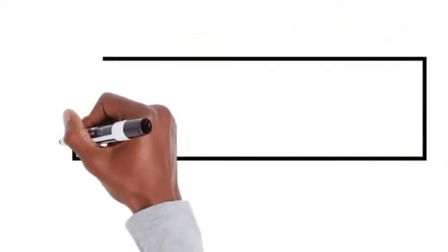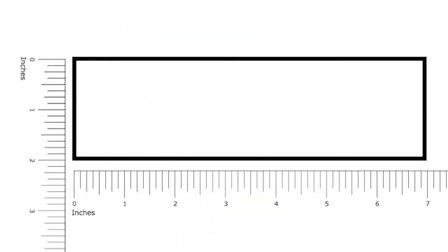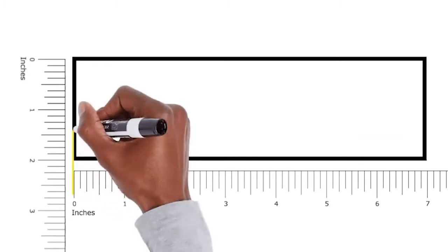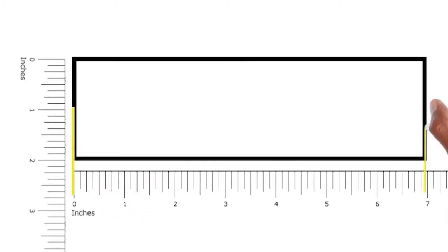Let's measure the perimeter of this rectangle. I need to make sure to place the edge of the object I'm measuring at zero. Where the object ends is the length. It looks like the rectangle has a width of two inches. Can you tell what the length is? Make sure you start at zero. And it looks like the length is seven inches. That's right.